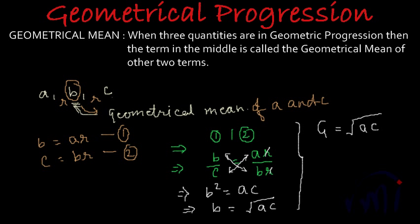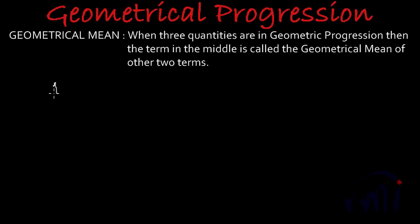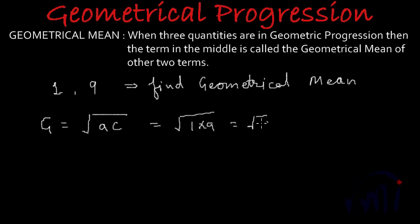Now let's take a few examples where we find the geometrical mean between two terms. If we are given two numbers like 1 and 9, and we are supposed to find the geometrical mean, we use the formula: G equals the square root of the product of those two terms. So it will be the square root of 1 multiplied by 9, that is the square root of 9, giving us plus or minus 3.